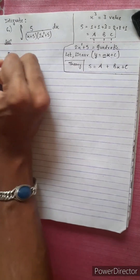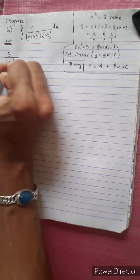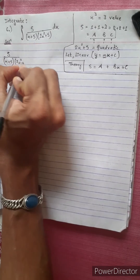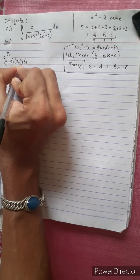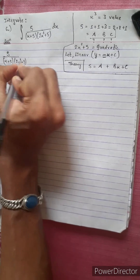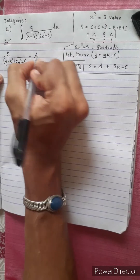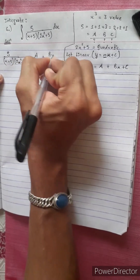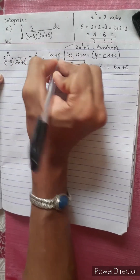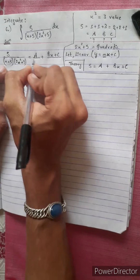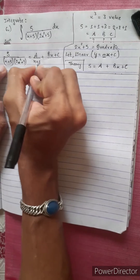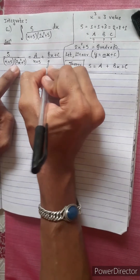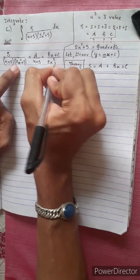We write 5 divided by (x plus 5)(2x squared plus 5) equals A divided by (x plus 5) plus (Bx plus C) divided by (2x squared plus 5).